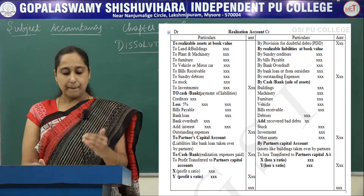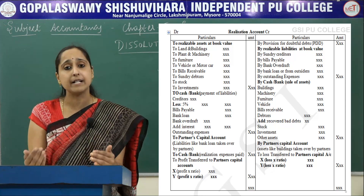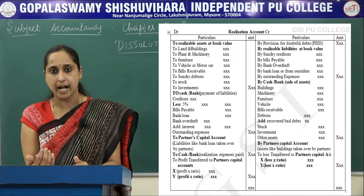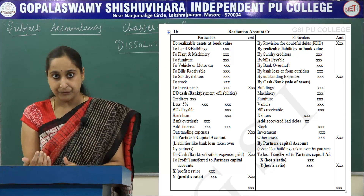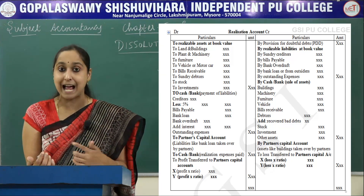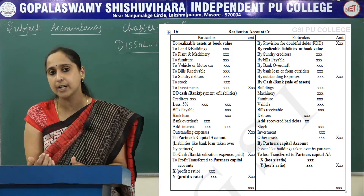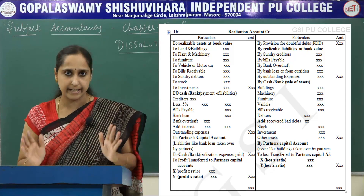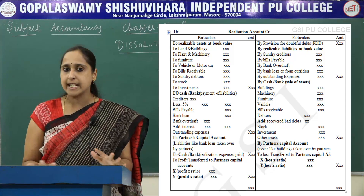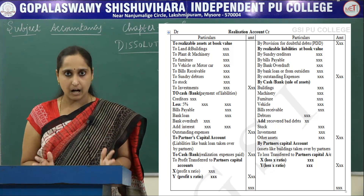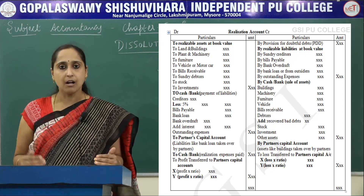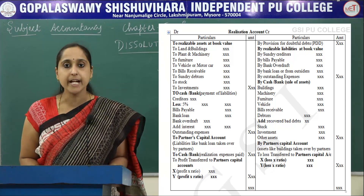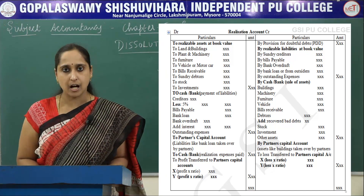Next is by Partner's Capital Account. If a partner has taken any asset when the firm is dissolved, that amount should be recorded on the credit side. If a liability is taken over by any partner, that should be recorded on the debit side. If an asset is taken over by any partner, it should be recorded on the credit side. After doing all these adjustments, you balance this account — you usually get either profit or loss, which is transferred to Partners Capital Account in their profit sharing ratio. This is the Realization Account format.